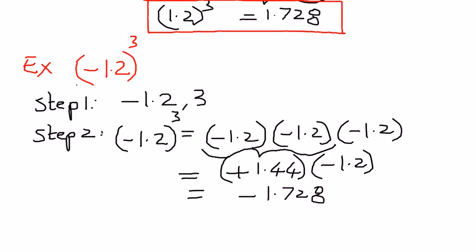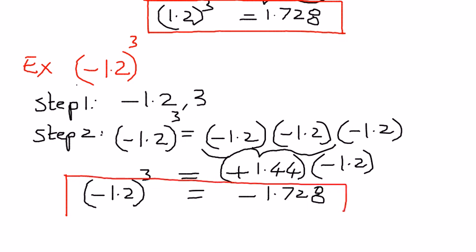This time the answer came out as a negative value. So when we have a decimal number with a negative sign attached to it and it is raised to an odd exponential power, the answer is going to come out as a negative value. Therefore, negative 1.2 raised to the power of 3 equals negative 1.728.